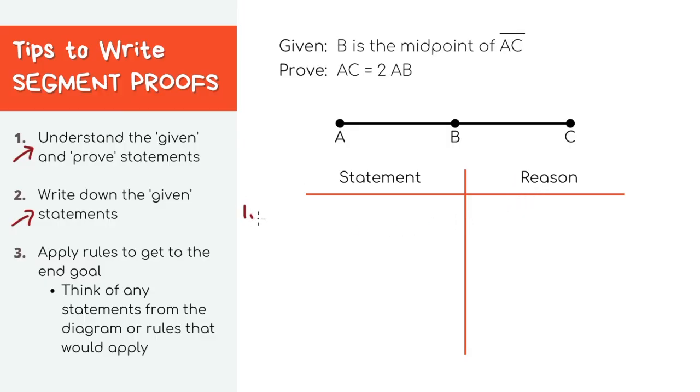To get started, let's always write down the given as our first step. So here we'll literally just write B is the midpoint of segment AC. And the reason is just that it's given, easy points right here.